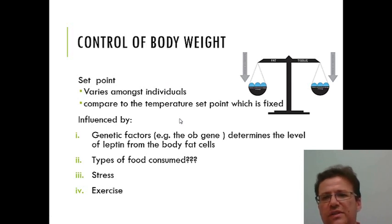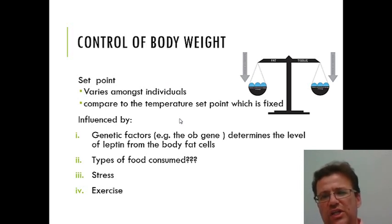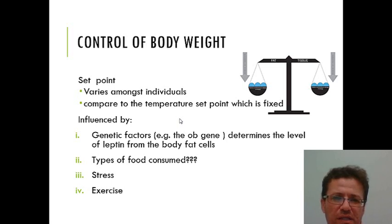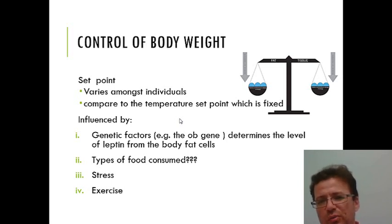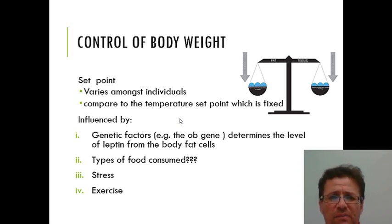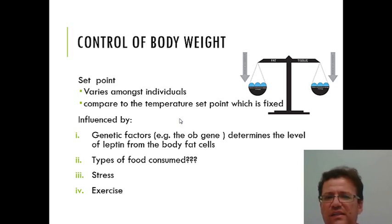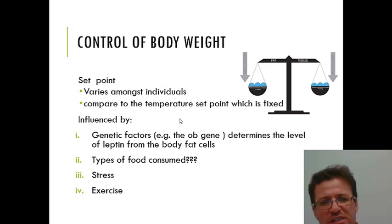The set point theory says we all have set points that determine our weight, but unlike temperature — where all individuals share the same set point — we all have different body weight set points, believed to be determined by our genetics. In particular there is a gene called the ob gene, which triggers the formation of a hormone called leptin, key to setting body weight. This set point has also been shown to be influenced by stress, exercise, and the types of food consumed — unlike temperature, it is susceptible to external and environmental influences.